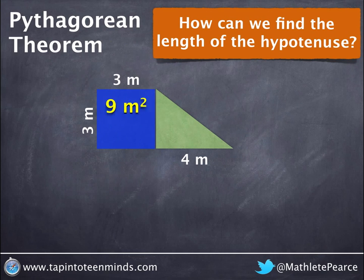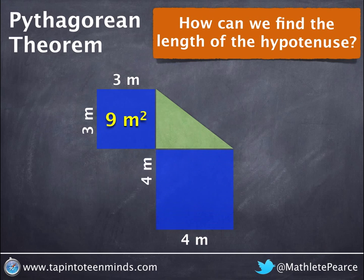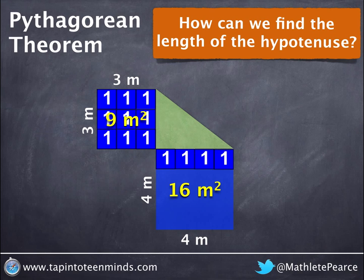If we square 3 meters, we get 9 meters squared, and if we do the same for 4 meters, we get 16 meters squared. In our video, we'll represent this with unit tiles.